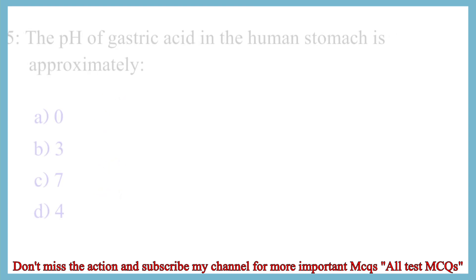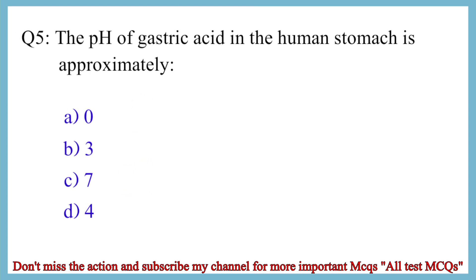Question No. 5. The pH of gastric acid in the human stomach is approximately? The correct answer is option B: 3.